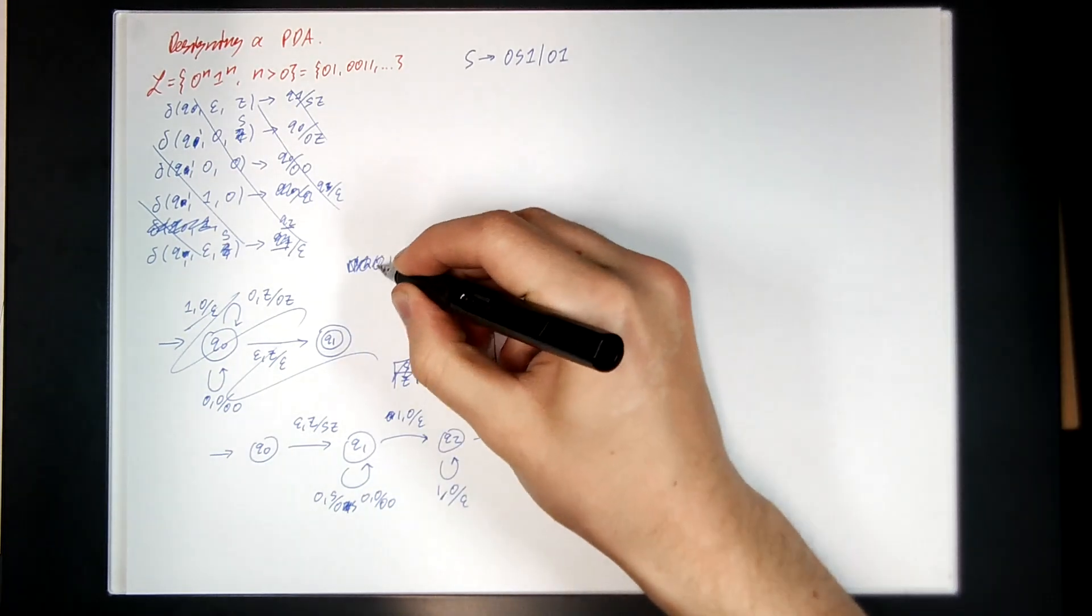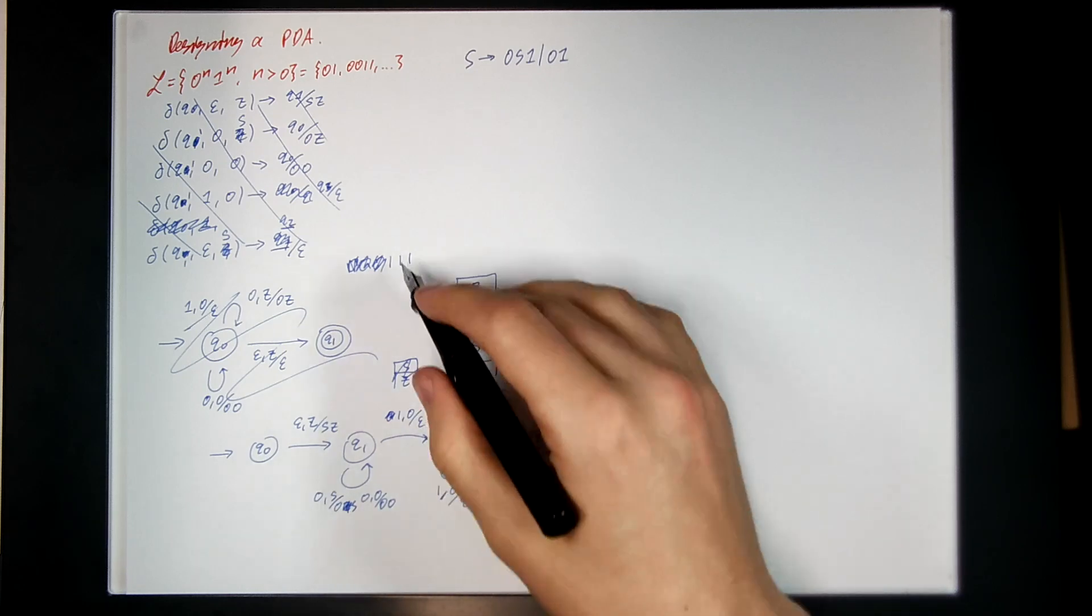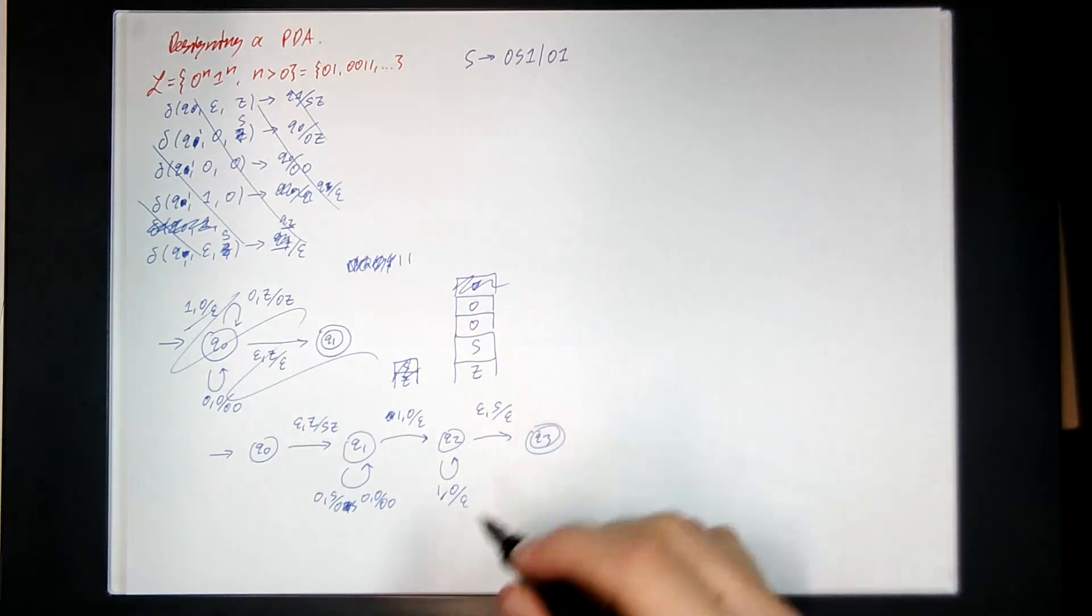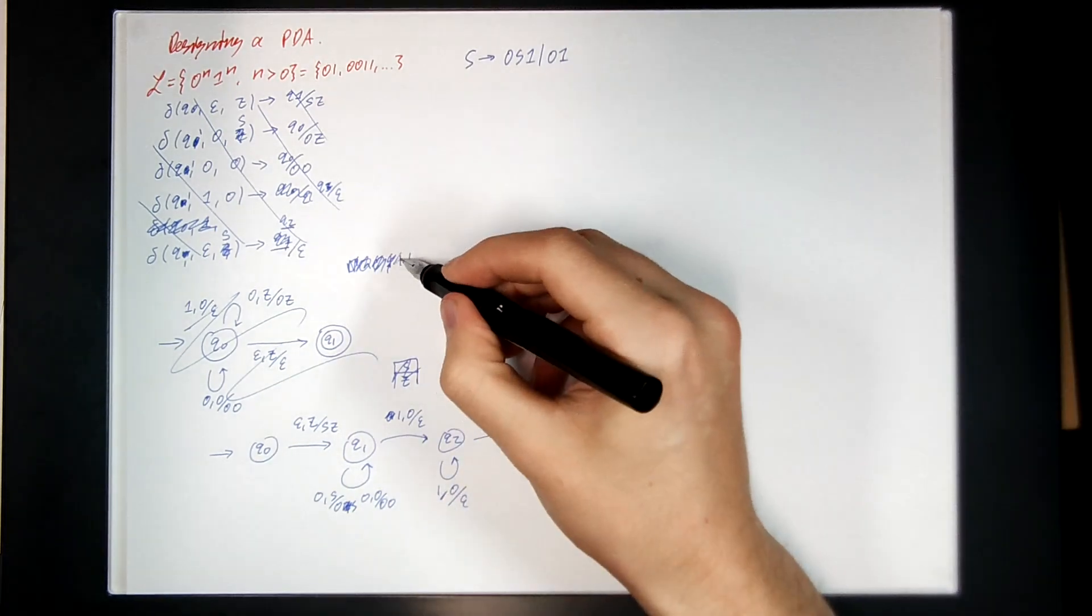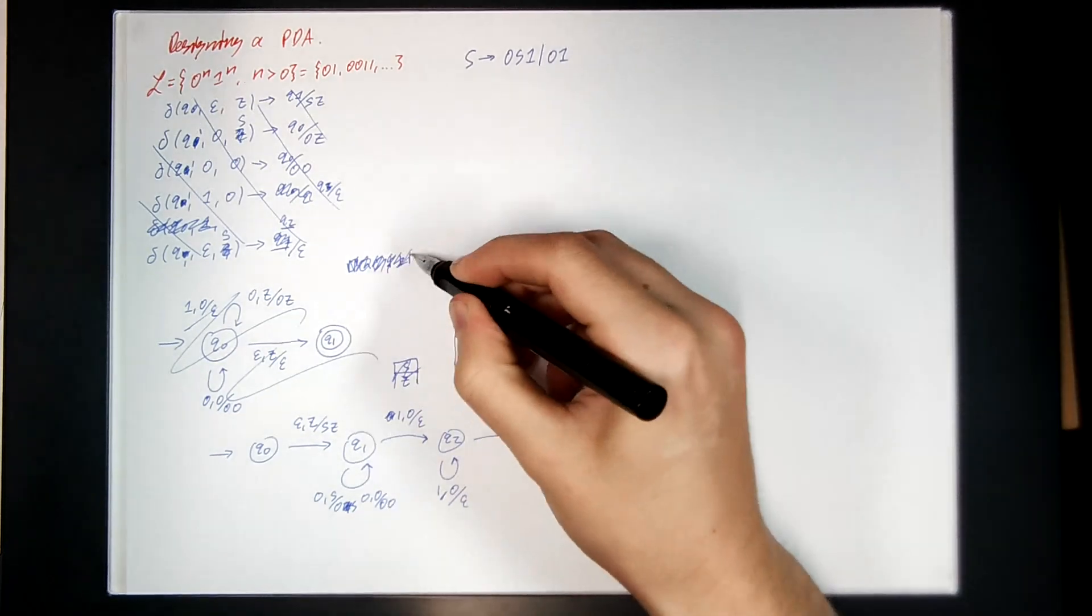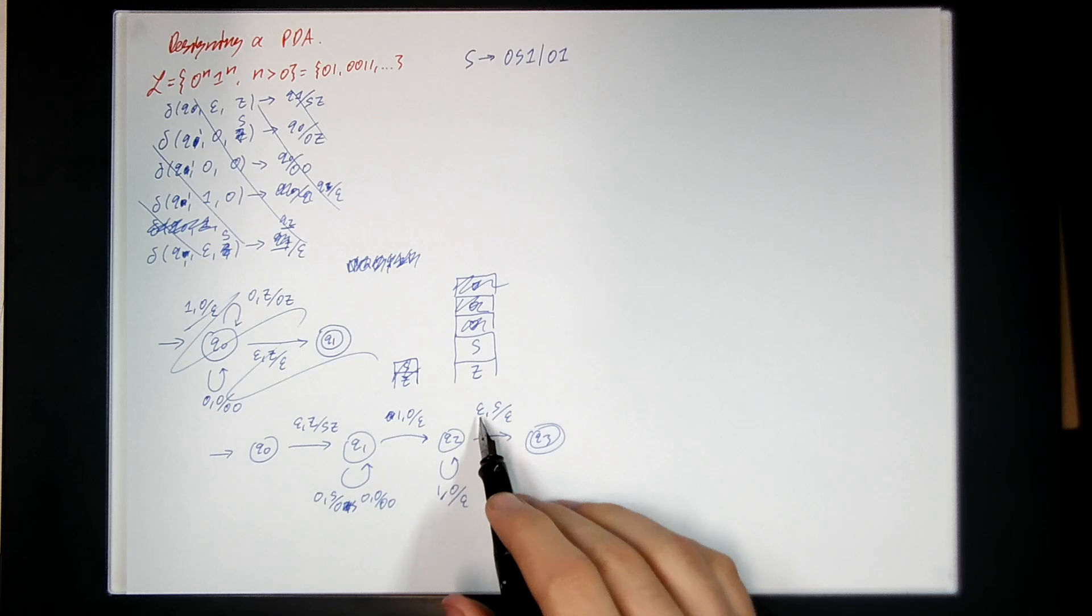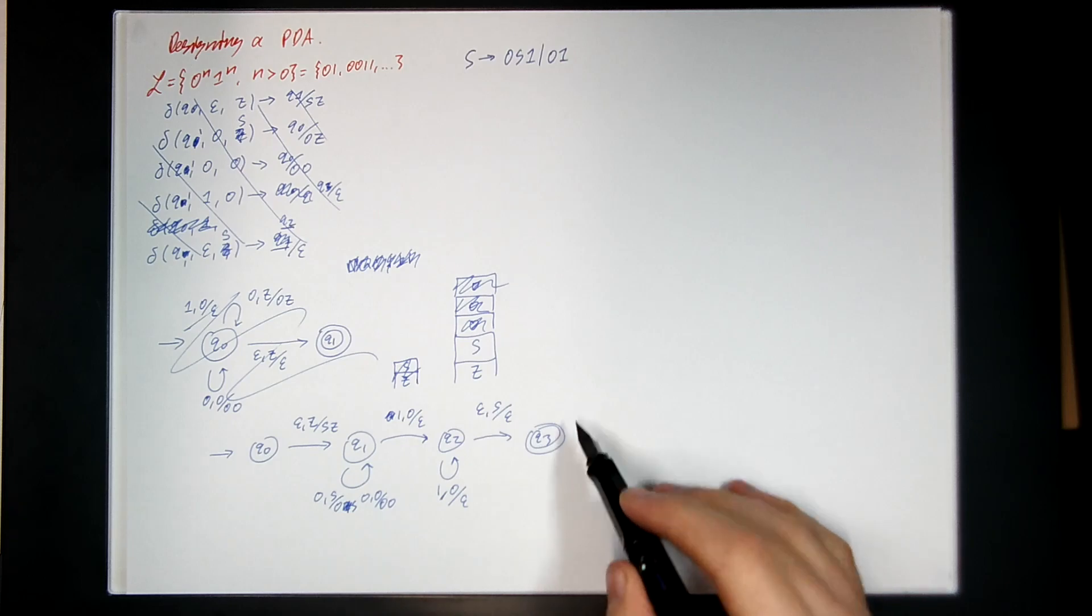Now I see a 1. 1 on the input, 0 on the stack. Pop the 0 and read in the 1. So the 1 is now gone, and the 0 gets deleted with it. Now we're in state Q2, and we're going to repeat. See a 1, see a 0. See a 1, see a 0. There's no more input to read, so the only thing I can do is an epsilon transition. And I see the end of stack symbol S, which means I transition to Q3 and accept.